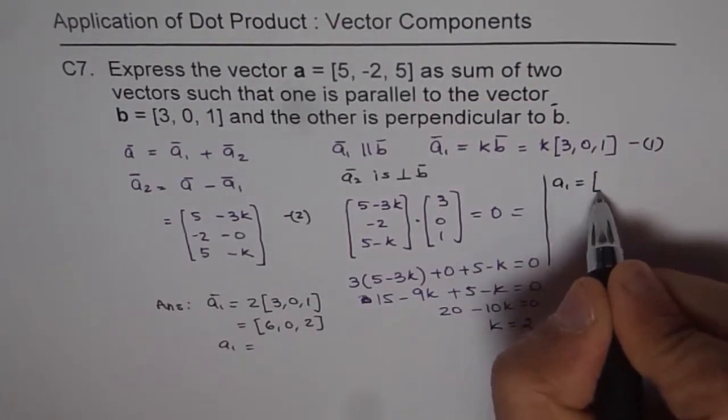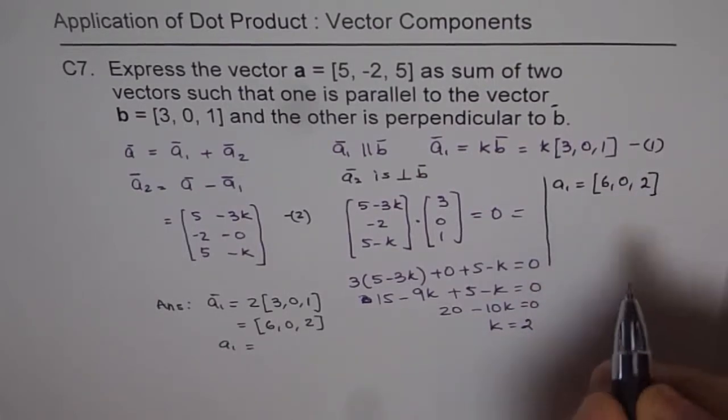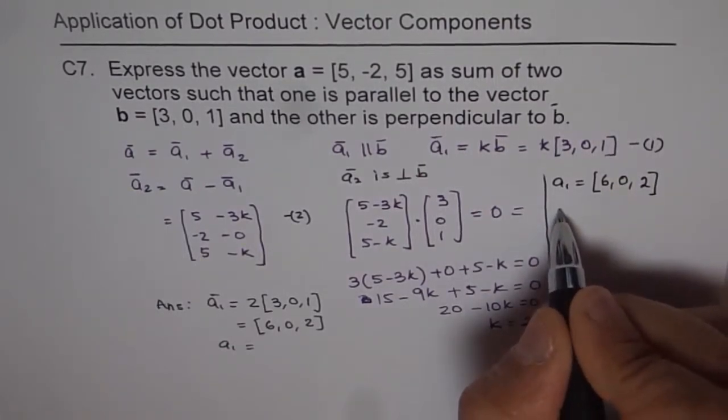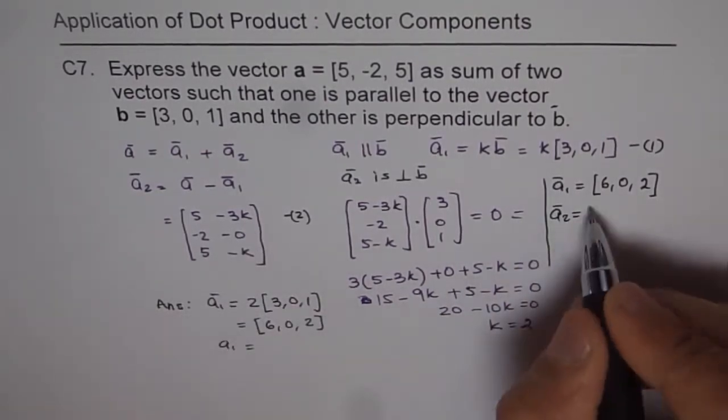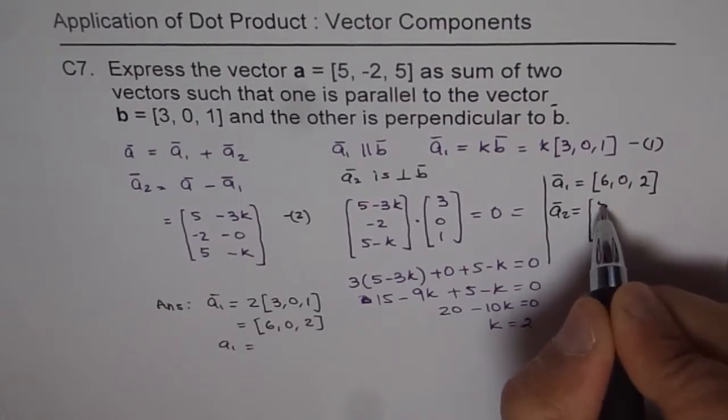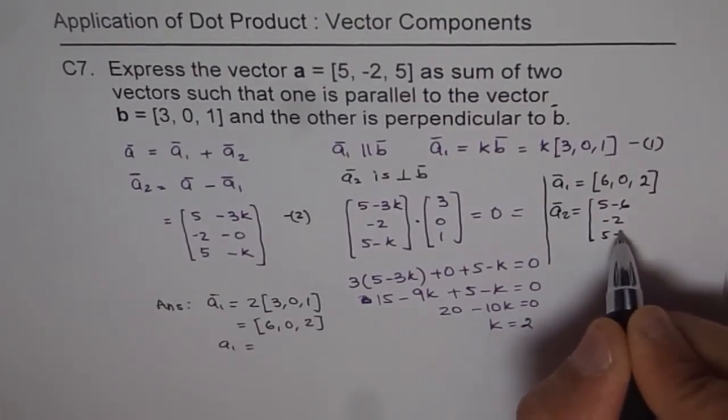a₁ is 2 times this, which is [6, 0, 2]. And a₂ is equal to, we'll put k as 2, so we get [5 - 6, -2, 5 - 2].